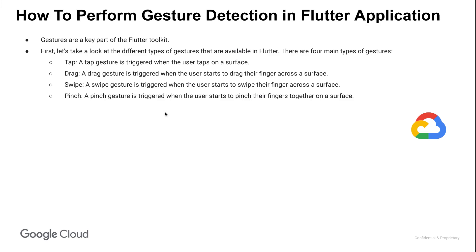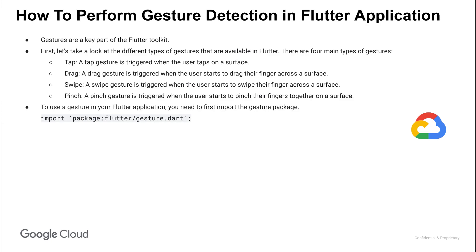Now that we know the different types of gestures, let's take a look at how to use them in our Flutter application. To use a gesture in your Flutter application, you need to first import the gesture package. This can be done by adding the following import line to your imports. Once you have imported the gesture package, you can start using gestures in your code.